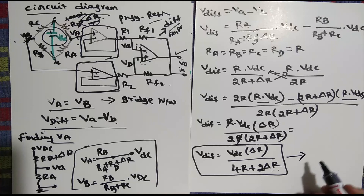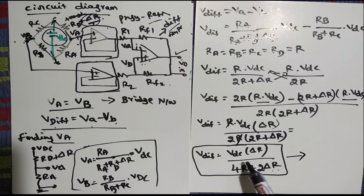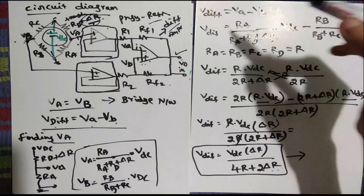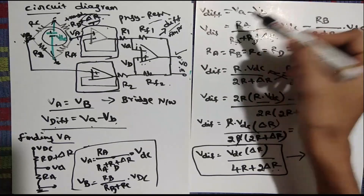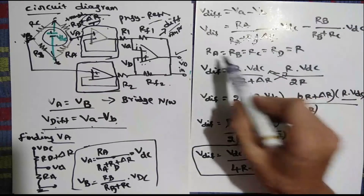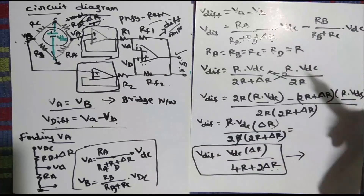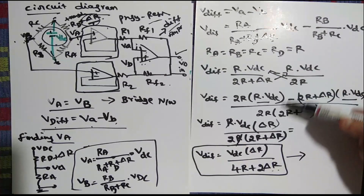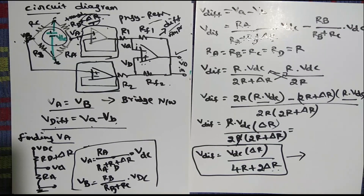This is the final formula for V difference — whatever delta R change occurs is reflected in V difference. This is the whole concept of the instrumentation amplifier. To memorize: take Va minus Vb, make all resistances equal to R, and simplify. You will get one R. This is all about the instrumentation amplifier.